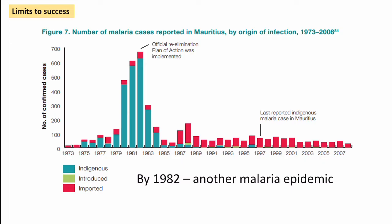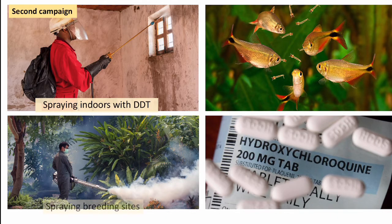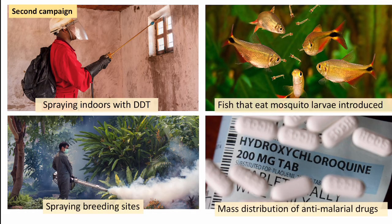This combination basically meant that by 1982 there were malaria epidemics again, with a significant number of cases. So they had to implement a new strategy in 1982 to try and combat it again. The second campaign was similar to the first in some ways: they sprayed indoors with DDT and fogged or sprayed breeding sites to kill mosquitoes at the source. They also introduced a type of fish that would eat mosquito larvae — a more natural approach. In addition, they distributed anti-malarial drugs, specifically chloroquine, to the population, attacking the problem from multiple routes to eliminate the mosquitoes directly and deal with any cases of the disease.